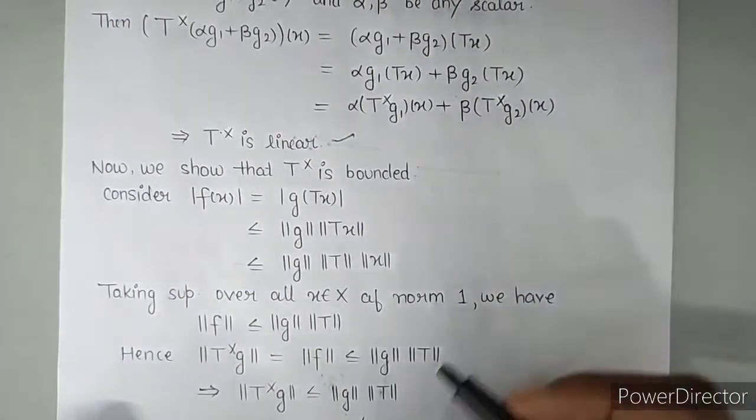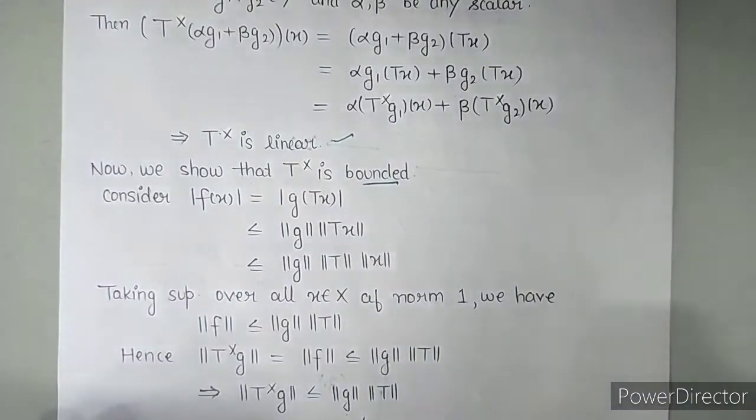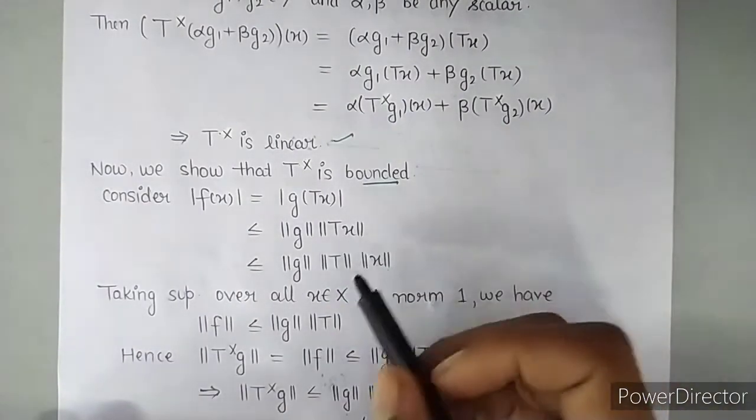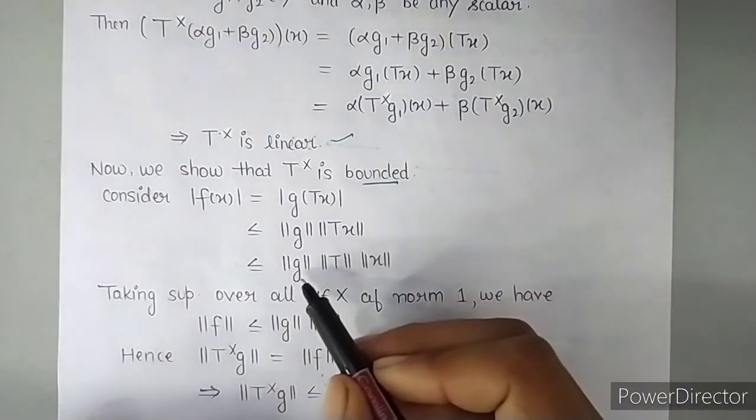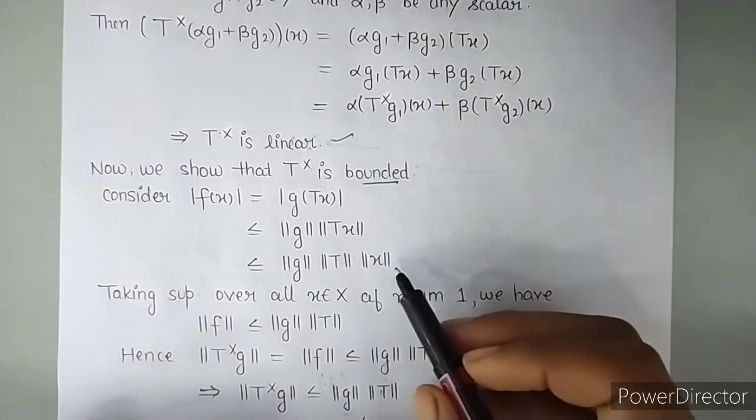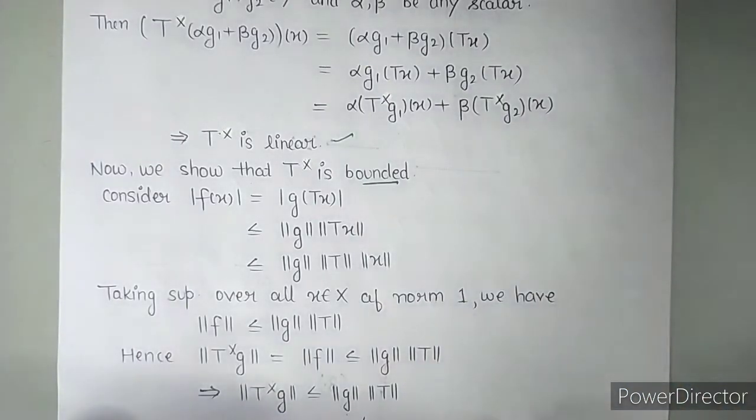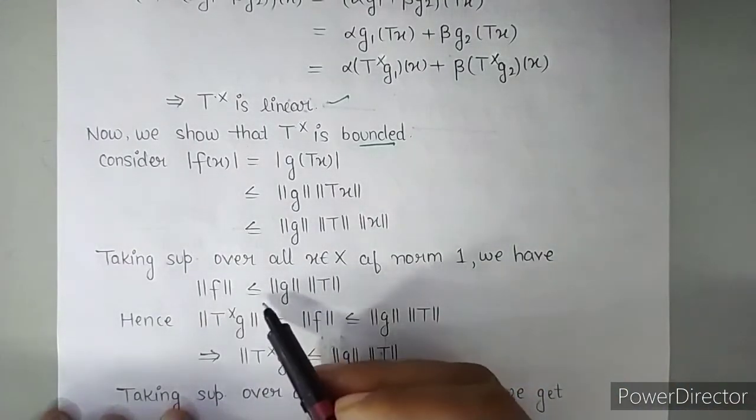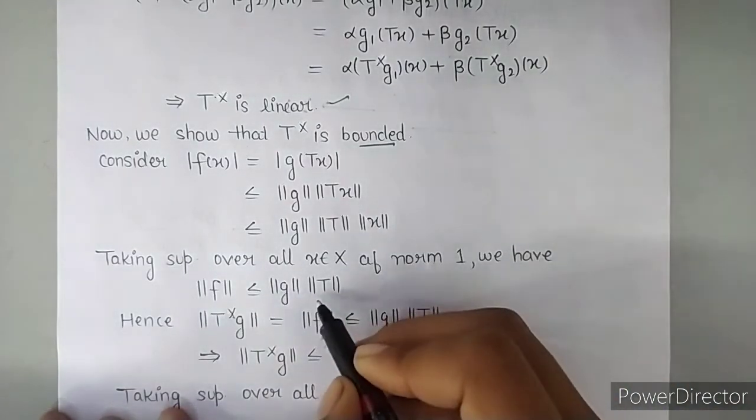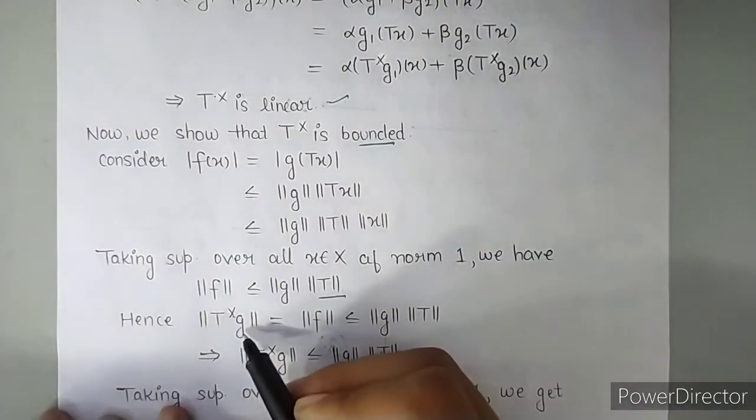Next we are going to prove that it is bounded. So for T star is bounded we will find mod of F of X. We found this before also, so I won't explain much. So this is less than equals to norm of G into norm of T with norm of X. And we took the supremum before also. So take its supremum. Norm of F is less than or equals to norm of G into norm of T.